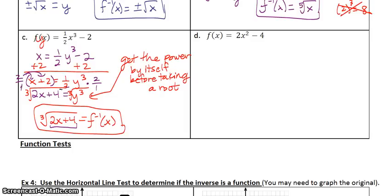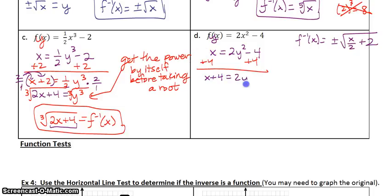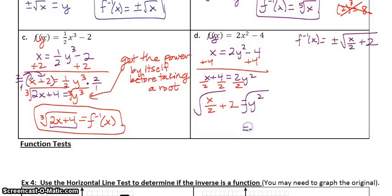For part D, pause the video and try it on your own. The answer is plus or minus the square root of one-half x plus 2, or equivalently x over 2 plus 2. If you got it correct, move on. If not: switch x and y, add 4 to both sides, divide everything by 2, then square root — and because it's an even root, put the plus or minus in front.